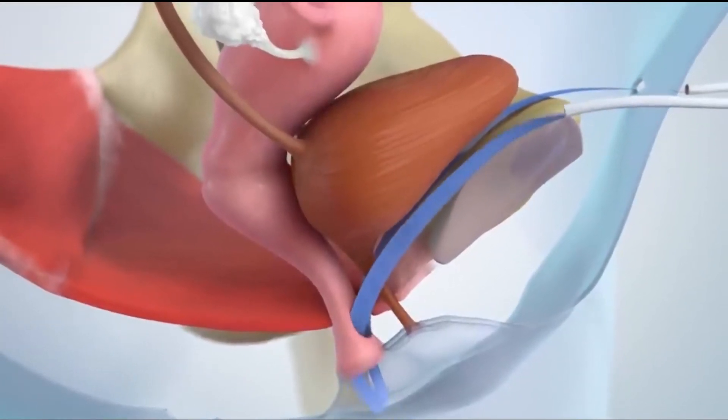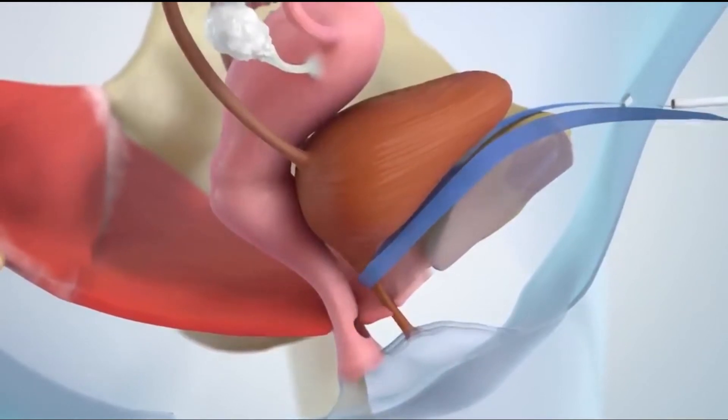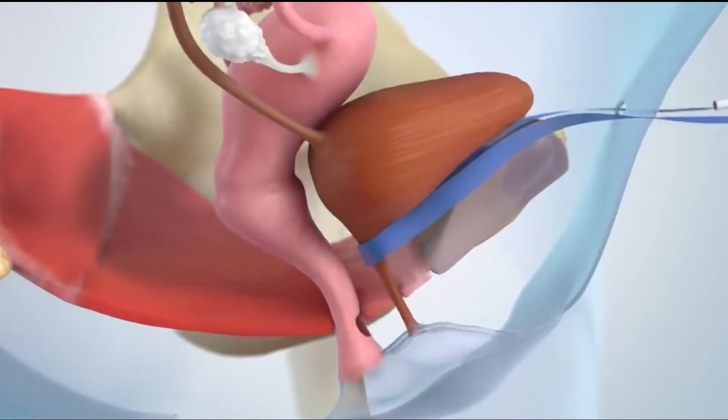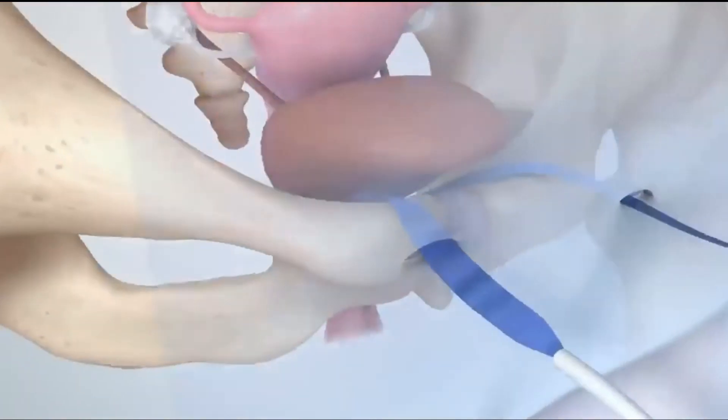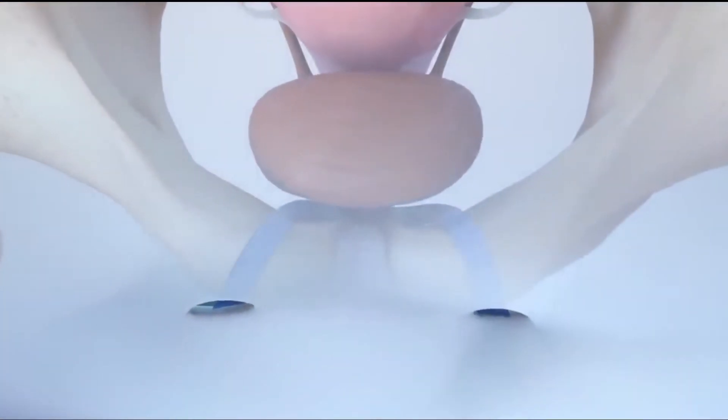Once the tape is in place, your surgeon will adjust it around your urethra to provide support. The ends of the tape will be cut just beneath your skin.